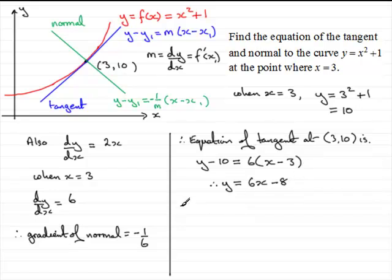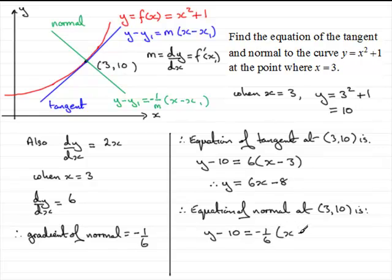When it comes to the equation of the normal, the equation of the normal at 3, 10 is: y minus y1, which is 10, equals the gradient, which is now minus 1 sixth, bracket, x minus x1, x1 being 3.